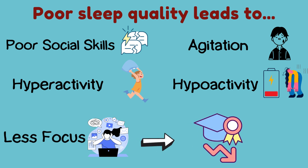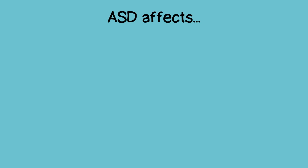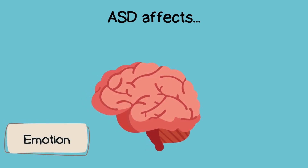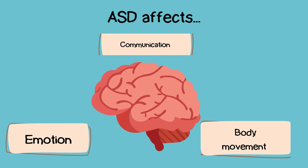Sleep is extremely important for all individuals, even those not diagnosed with ASD, who also need a good sleep pattern. When people don't get high quality sleep, the next day they are more likely to be cranky, moody, and non-social. The same goes for individuals with autism, but at a much more important level. ASD affects parts of the brain which control emotion, communication, and body movement, and so they need more sleep so that the brain can develop, grow, and recharge properly for the upcoming day.